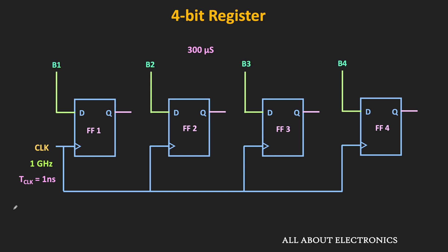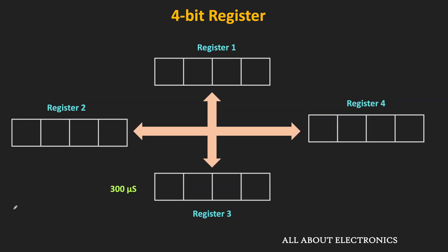That means we need to ensure that the data is available on the data bus up to 300 microseconds. So in a way, here we are also occupying this data bus up to 300 microseconds. And in between, if any other register in the system wants to access this data bus, then it won't be able to access that data bus. So let's see what we can do to avoid all these issues.